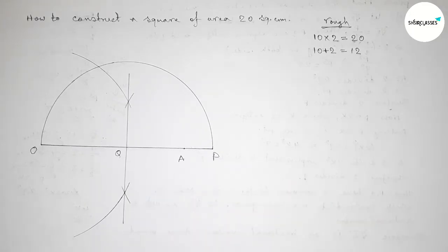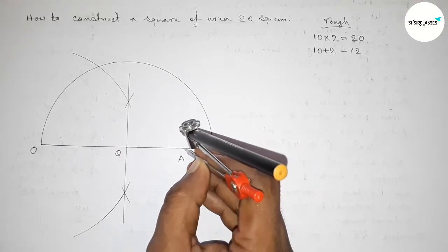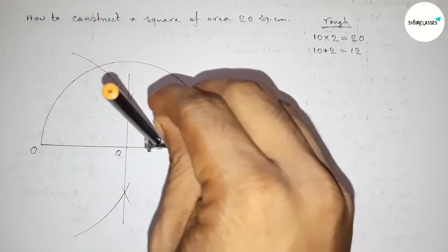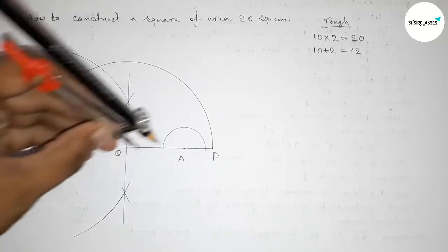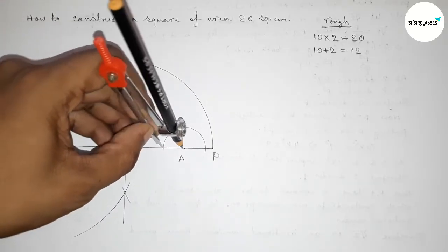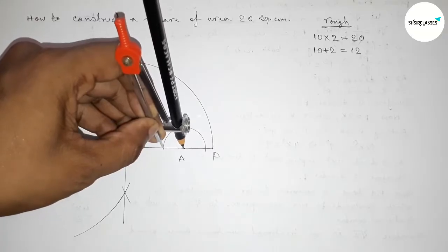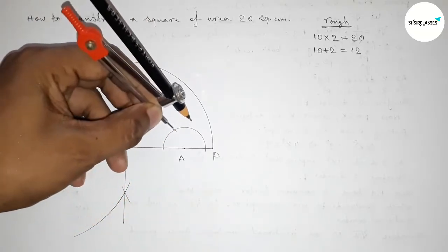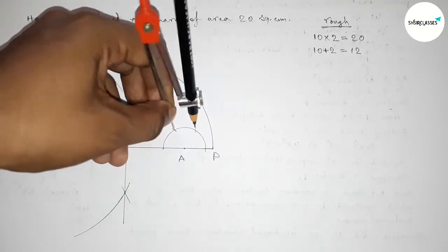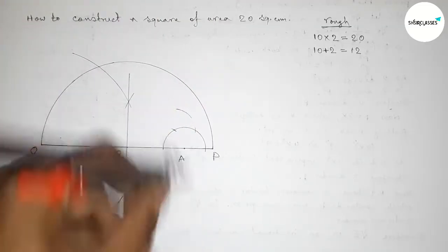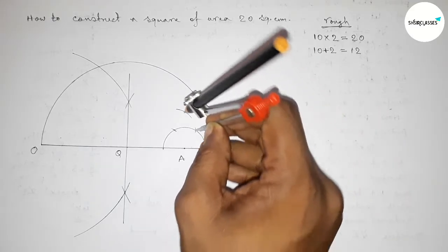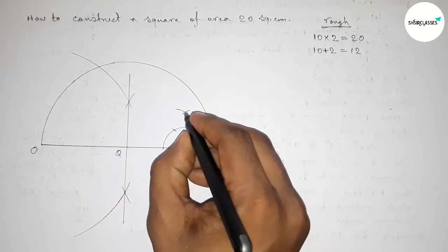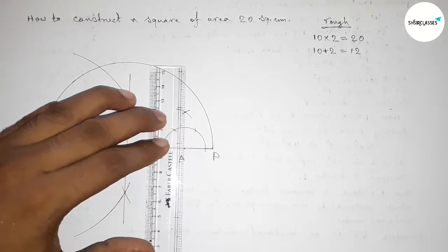Next we have to draw a 90 degree angle at point A using a compass. Putting the compass at A and drawing an arc, then with the same length cutting arcs at successive positions, and cutting the final arc to get an intersection point. This constructs the perpendicular at A.